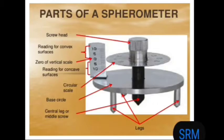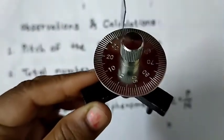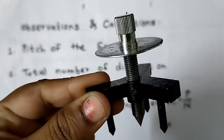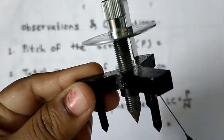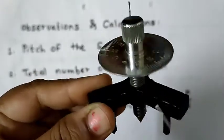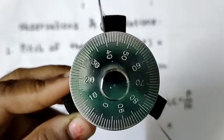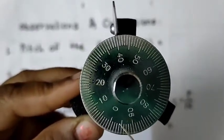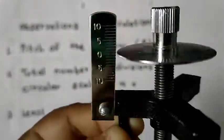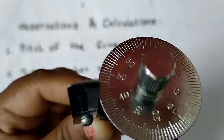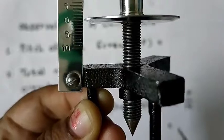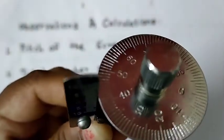Now we will see the different parts of the spherometer. You can observe a circular scale, main scale, base circle, central leg or the middle screw, and three legs. This is the central screw. On the circular scale, there are 100 divisions. The main scale, circular scale, three legs, and central screw are the important parts of the spherometer.